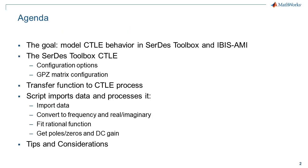In this video, I will discuss the goal of the conversion process and why you'd want to follow this approach, introduce the CERTES Toolbox CTLE block, then show the process in a MATLAB script that can be used to convert a transfer function to a GPZ matrix. Finally, I'll talk about some of the things you may need to do in order to get a good set of poles and zeros.